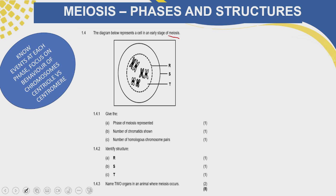The diagram represents an early stage of meiosis. You already know your stages — the sequence in meiosis. We start with prophase, then metaphase, anaphase, and telophase. But in meiosis, remember, we have two divisions: meiosis 1 and meiosis 2. So it's very important in meiosis that you label which stage and which division the phase belongs to. Here, it's showing us an early stage of meiosis.